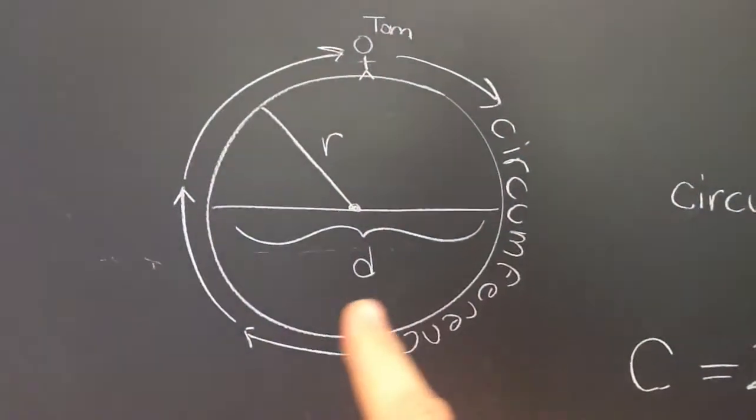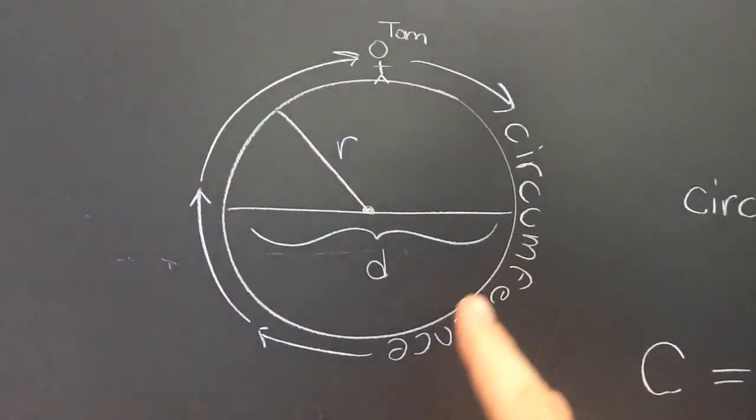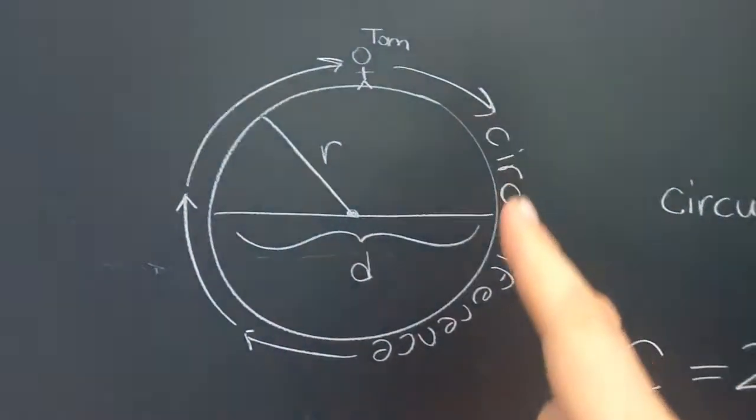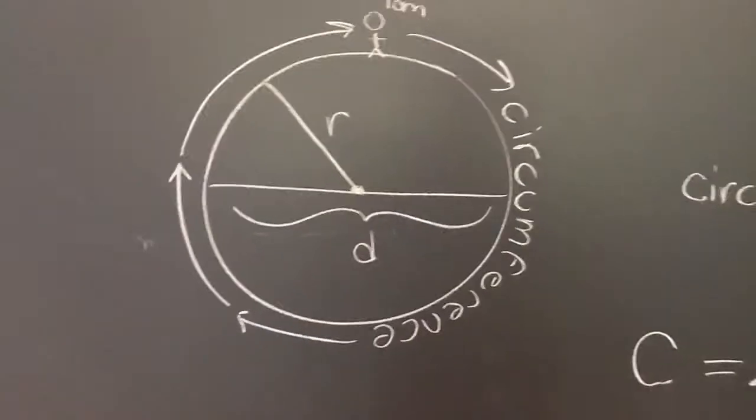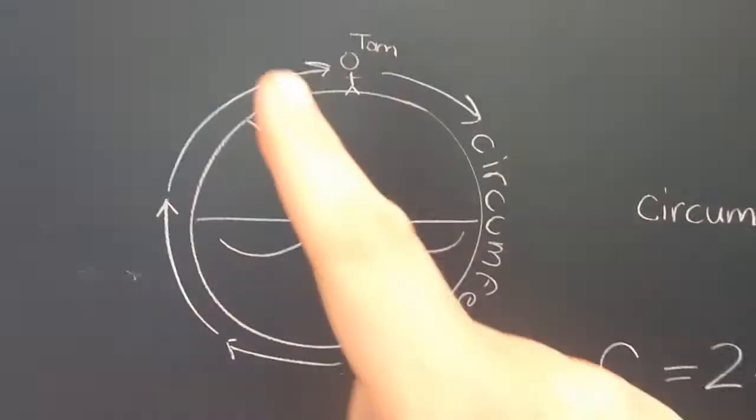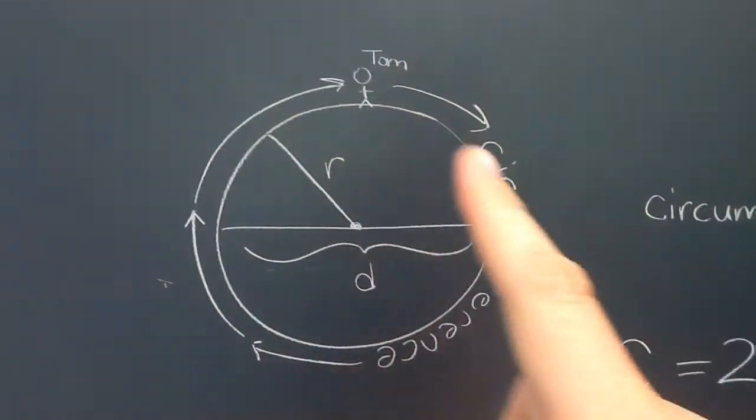The circumference of a circle is the distance, or if we want to put it another way, the circumference is the perimeter of the circle. It's the length of the bounded arc that surrounds the circle.